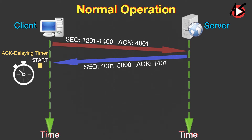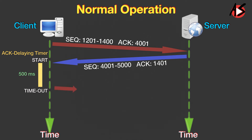When the client receives the first segment from the server, it has no more data to send and needs to send only an acknowledgement. However, the acknowledgement is delayed for 500 milliseconds to see if any more segments arrive. When the delayed ACK timer matures, it sends an acknowledgement, because the client has no knowledge of whether other segments are coming and cannot delay the acknowledgement forever.